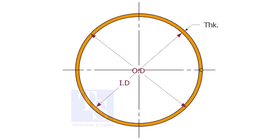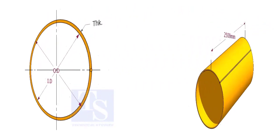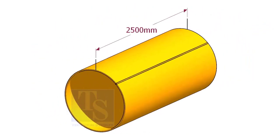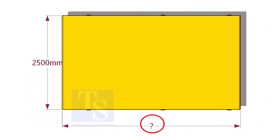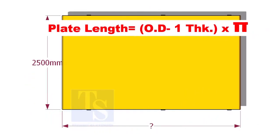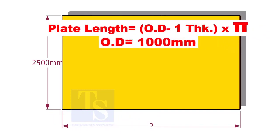Assume that we need a pipe with an inside diameter of 1000 mm, a thickness of 12 mm, and a pipe length of 2500 mm. What will be the length of the plate? To calculate the length, subtract 1 thickness of the pipe from the OD and multiply with the value of pi.